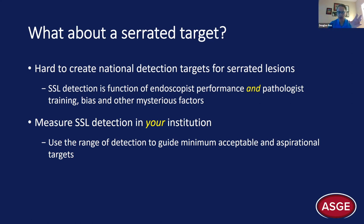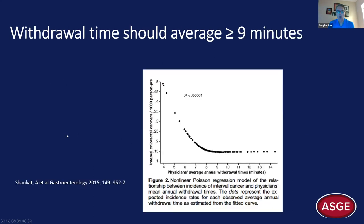Pathologists do a great job of placing lesions into either the conventional adenoma class or serrated class, and they're good at identifying cancer as submucosal invasion. After that, everything is subject to significant inter-observer variation. Within the serrated class, differentiating hyperplastic polyps from SSLs has a lot of inter-observer variation. A reasonable institutional SSL target is somewhere around seven to nine percent as a minimum threshold.